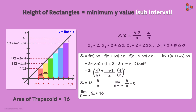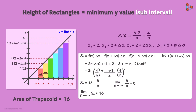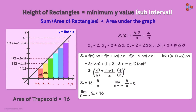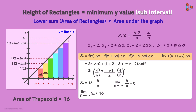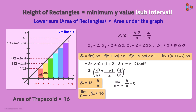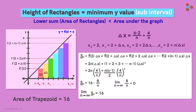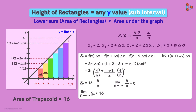Here, in each sub-interval we took the minimum y-value. In this case, the sum of the areas of the rectangles will always be less than the area under the graph. So this sum is called the lower sum, and we denote it by placing a lower bar on the sum symbol. But what if instead of the minimum y-value in each sub-interval, we had taken any other y-value? Will that also work?